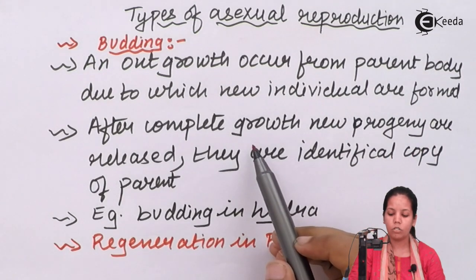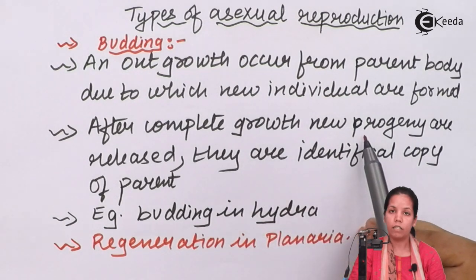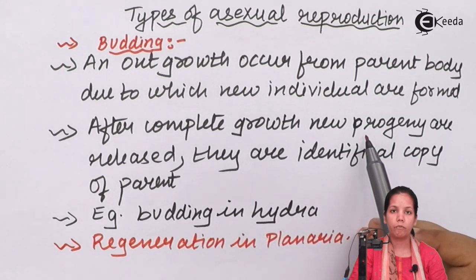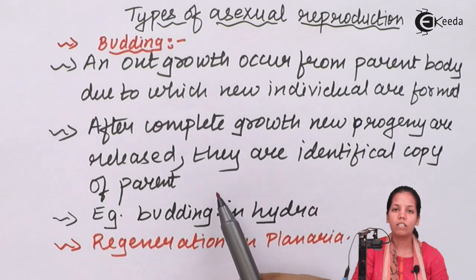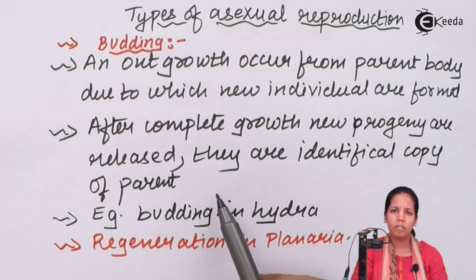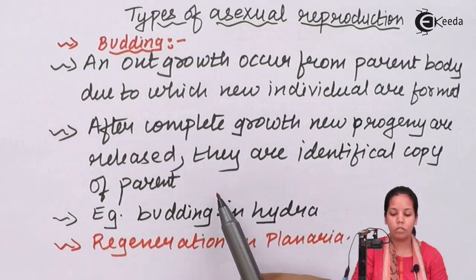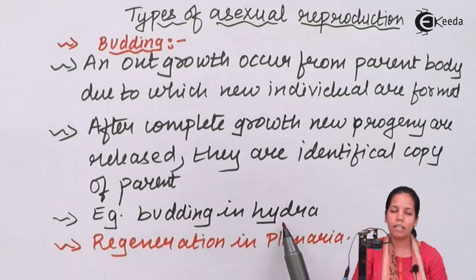After the completion of growth, the new progeny dissociates or the new offspring dissociates from the pre-existing parent. The basal disc of the Hydra remains attached during this process. There is also formation of gemmules in this process that give rise to new individuals. Budding in Hydra is thus a kind of Asexual Reproduction.